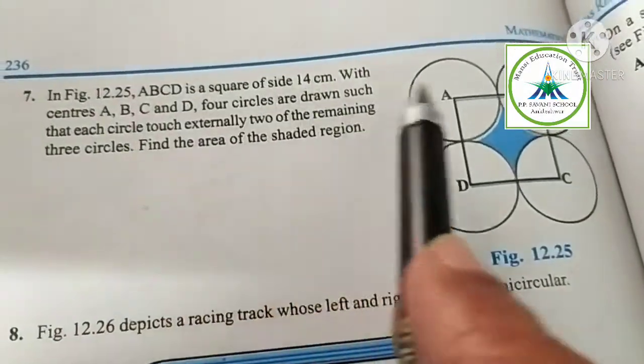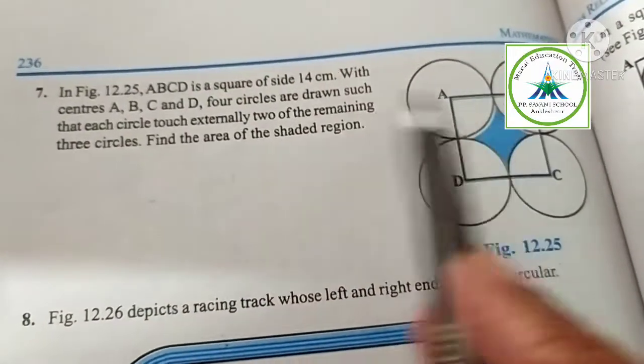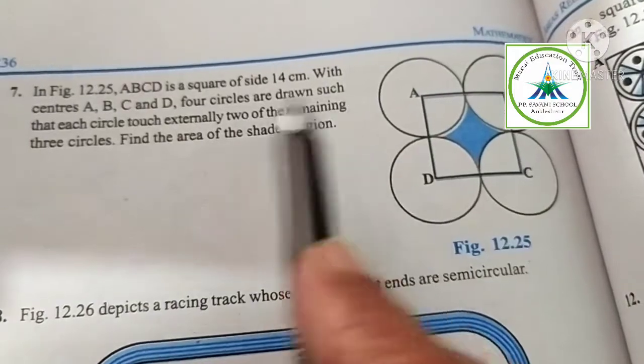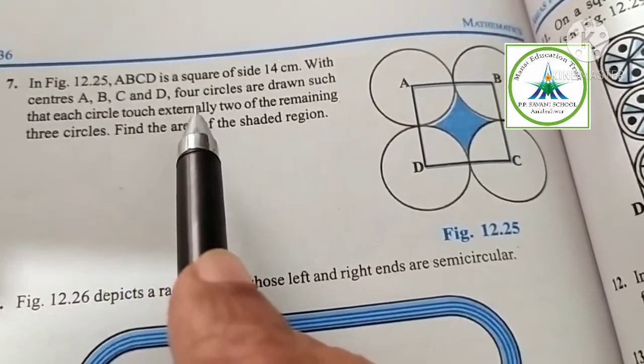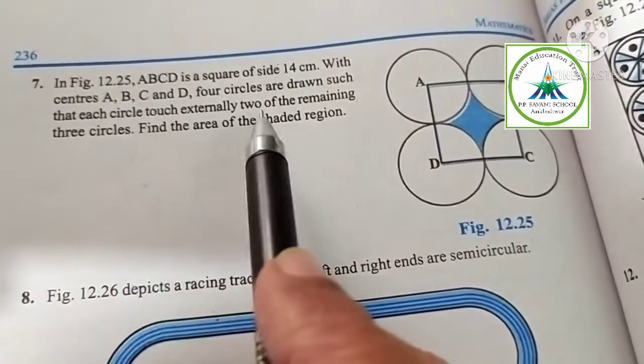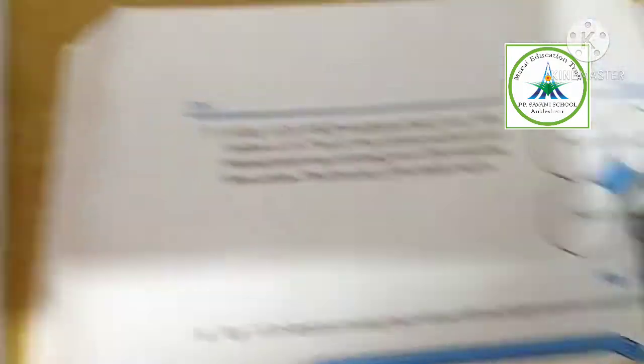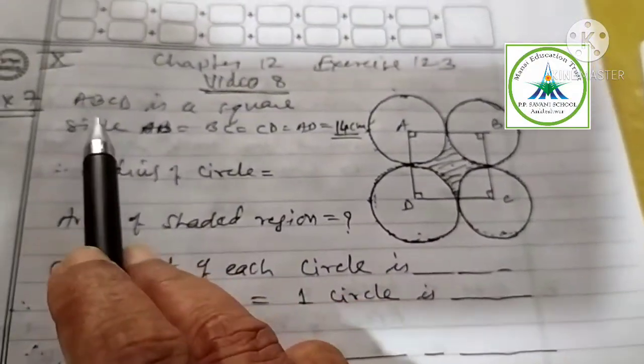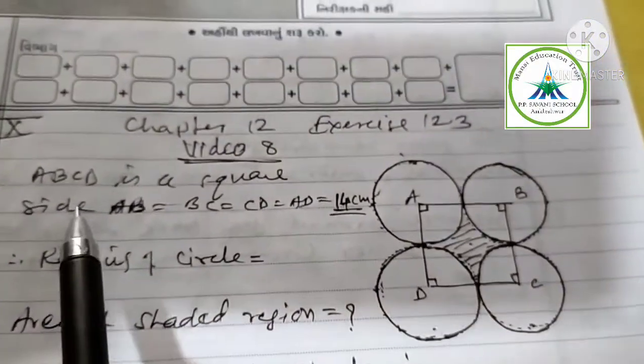In this figure, ABCD is a square with side 14 cm. With centers A, B, C and D, four circles are drawn such that each circle touches externally two of the remaining three circles. Find area of the shaded region. Same diagram I have drawn here.